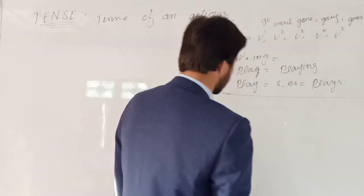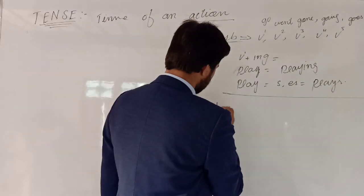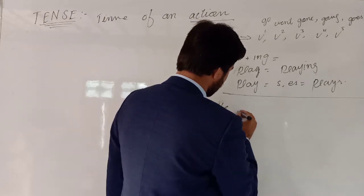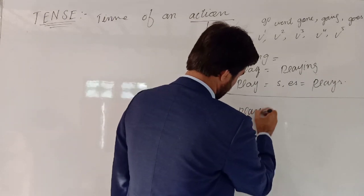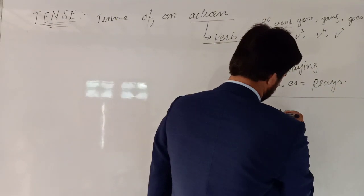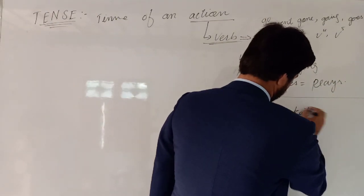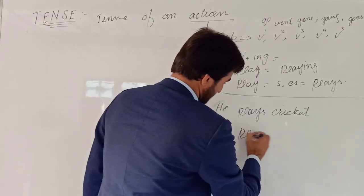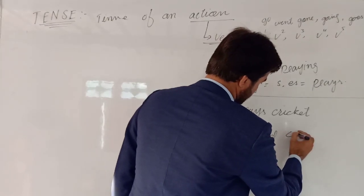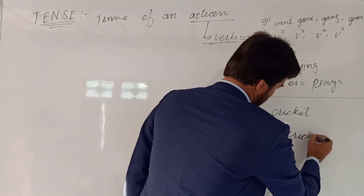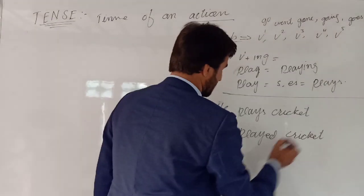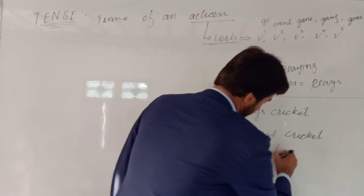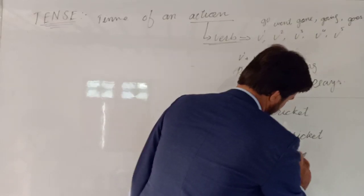For example, look at these sentences: 'He plays cricket' — that is present tense. 'He played cricket' — that is past tense. 'He will play cricket' — that is future tense.